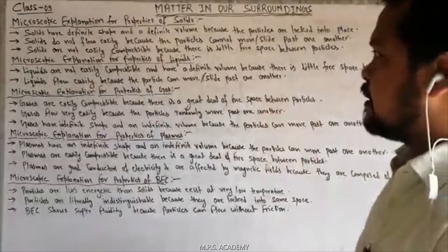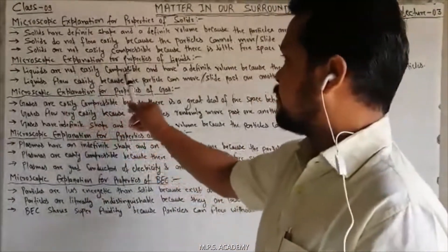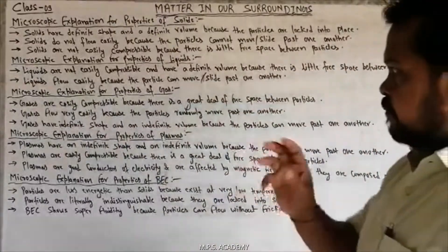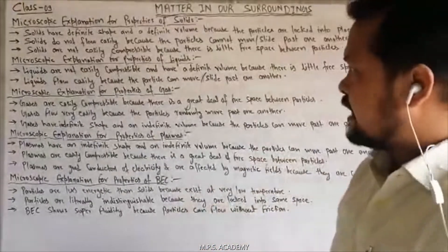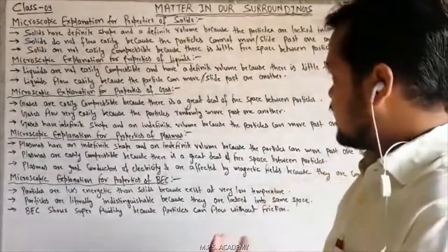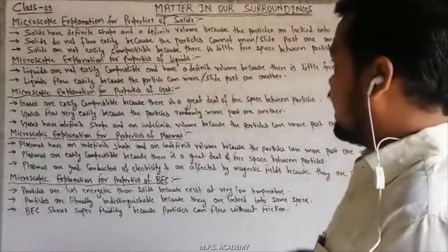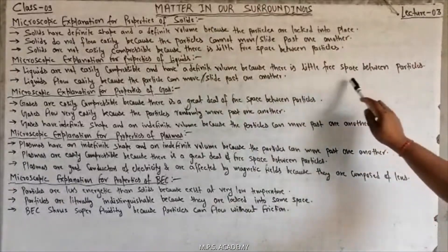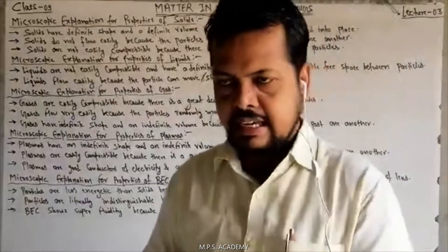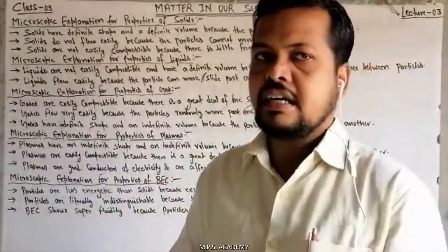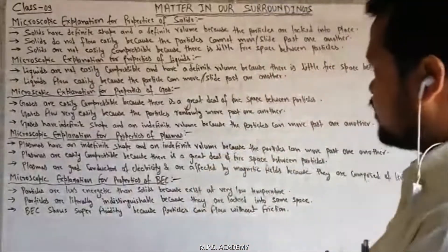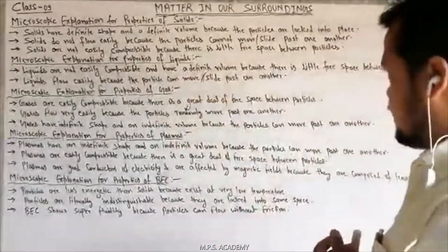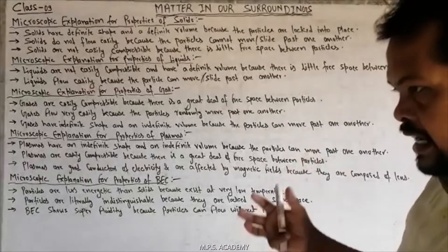Now, microscopic explanation for properties of liquid. Liquids are not easily compressible and have a definite volume because there is a little free space between particles. जो liquid होते हैं वो easily compress नहीं होते हैं और इनका volume definite होता है, क्योंकि solid की तुलना में liquid में particles के बीच थोड़ा ज्यादा space होता है, लेकिन इतना भी नहीं कि easily compress हो सकें।